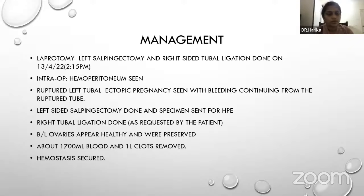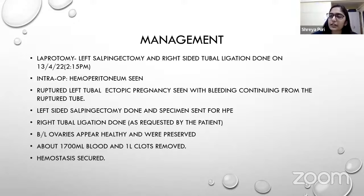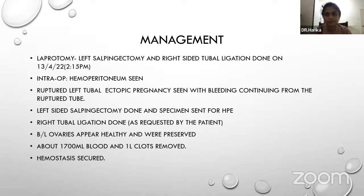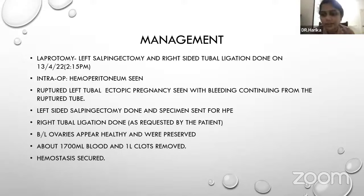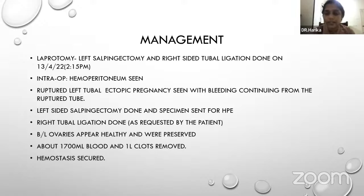Bilateral ovaries appeared healthy and were preserved. Approximately 1700 ml of blood and around one liter of clots were removed and hemostasis was secured. The instructor asks when to start blood transfusion in ectopic pregnancy — the answer is intraoperatively, once the bleeder is identified and ligated; giving blood before ligation is futile as blood will continue to be lost.